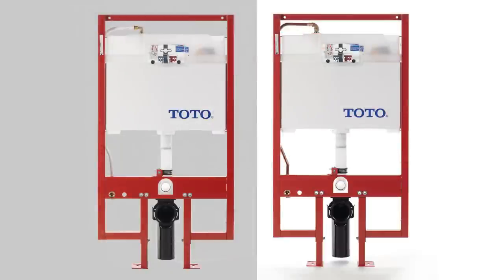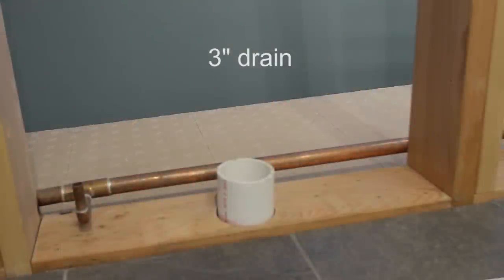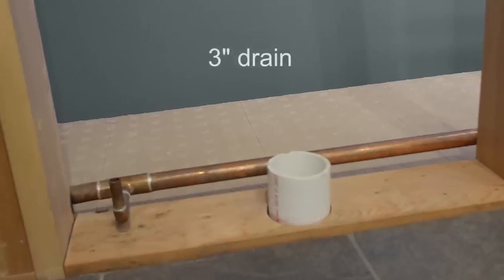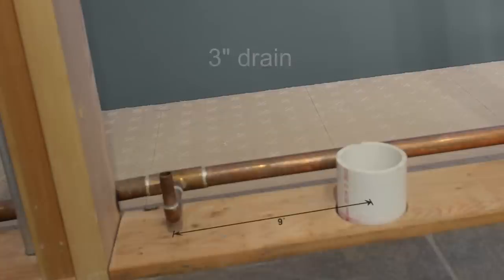There are two versions of the carrier, one for PEX water lines and one for copper. For a three inch drain, drill a three and a half inch hole that is one and three quarter inches back from the front of the studs and centered between the studs. You'll need a half inch water line about nine inches to the left of the centerline.